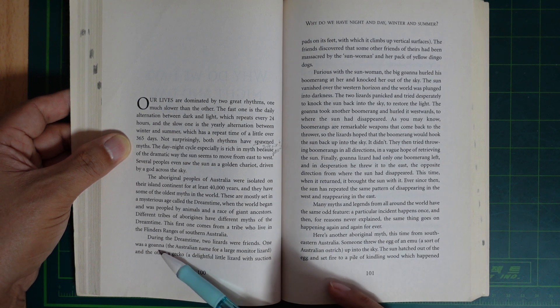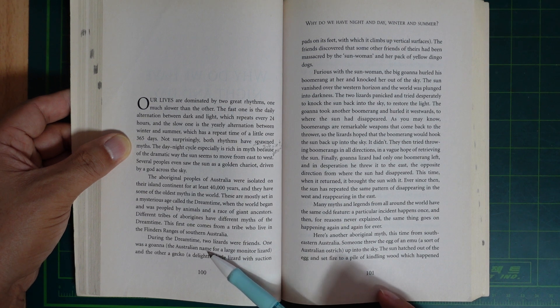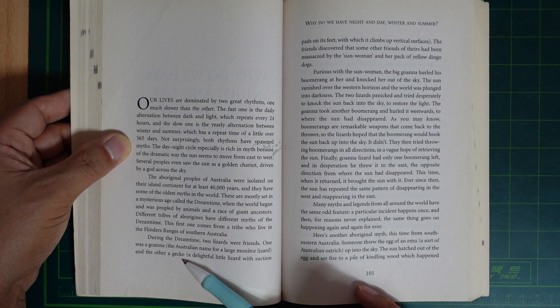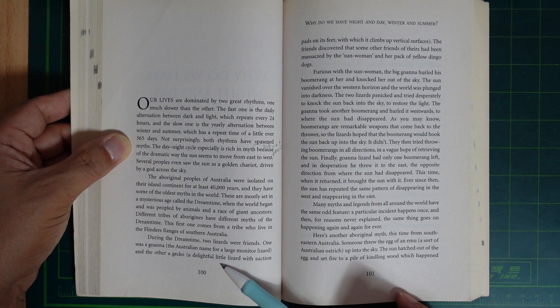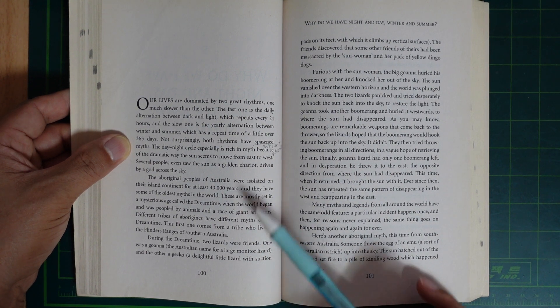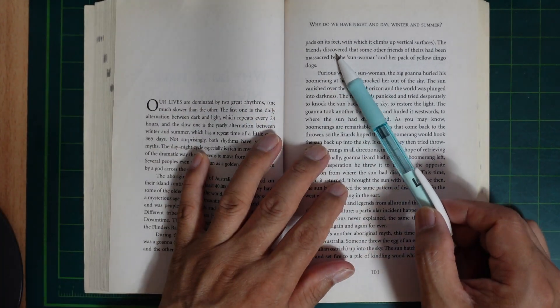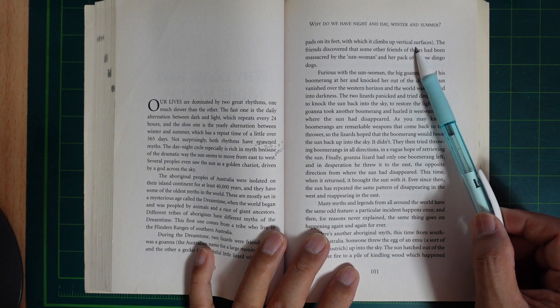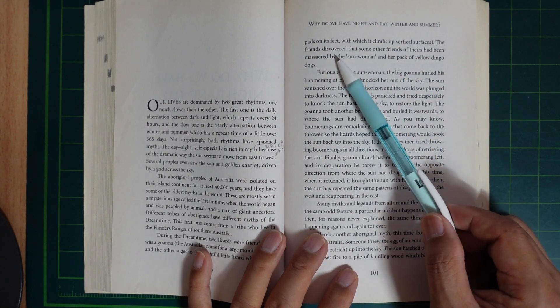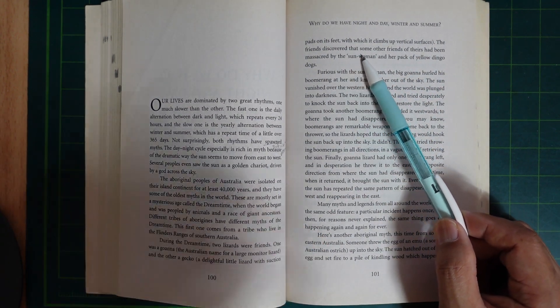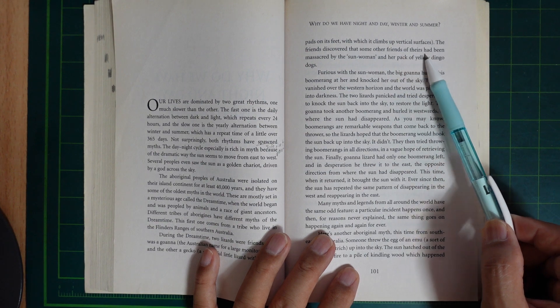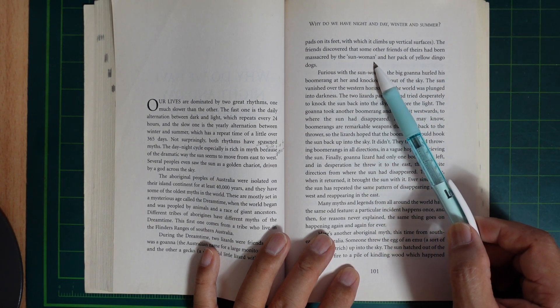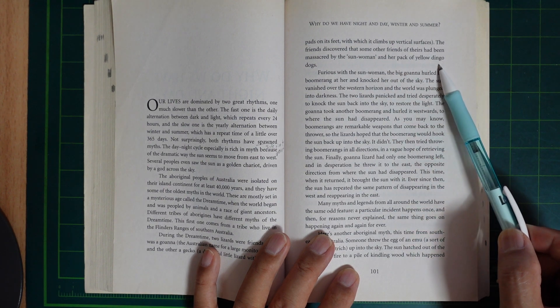During the Dreamtime two lizards were friends. One was a goanna, the Australian name for a large monitor lizard, and the other a gecko, a delightful little lizard with suction pads on its feet with which it climbed vertical surfaces. The friends discovered that some other friends of theirs had been massacred by the sun woman and her pack of yellow dingo dogs.